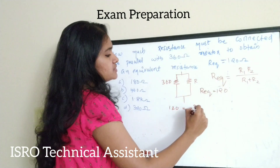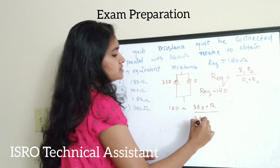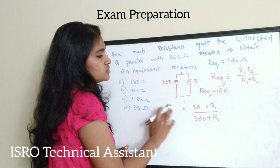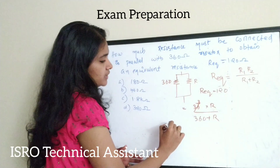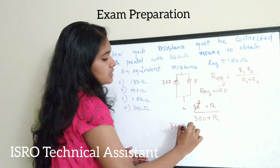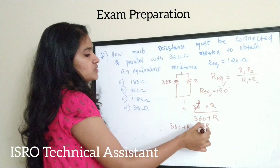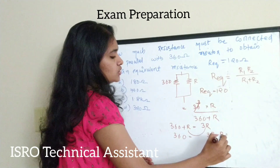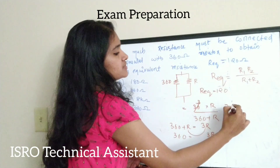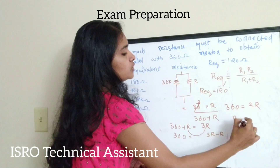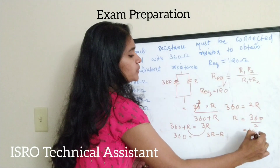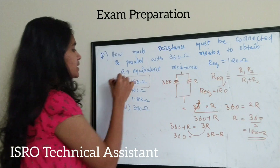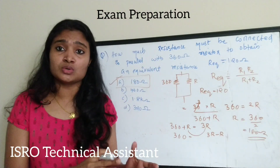Substituting into the equation: 120 = (360 × R) / (360 + R). Since 120 divides into 360 as 3, we get 360 + R = 3R. Therefore 360 = 3R − R = 2R, so R = 360 / 2 = 180 ohm. The correct answer is option A, 180 ohm. Connecting 360 ohm in parallel with 180 ohm gives an equivalent resistance of 120 ohm.